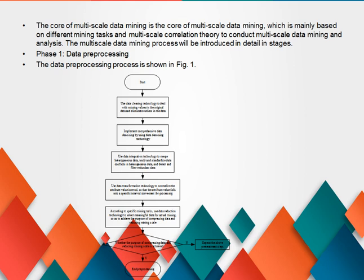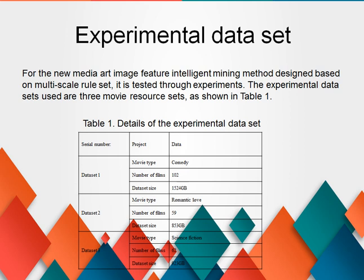Phase 1 – Data Preprocessing: The data preprocessing process is shown in the figure. For the new media art image feature intelligent mining method designed based on multi-scale rule set, it is tested through experiments. The experimental data sets used are three movie resource sets, as shown in Table 1.